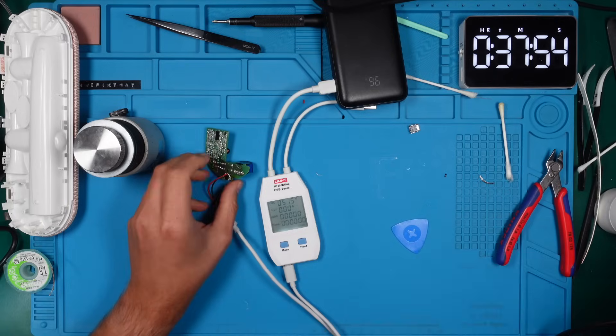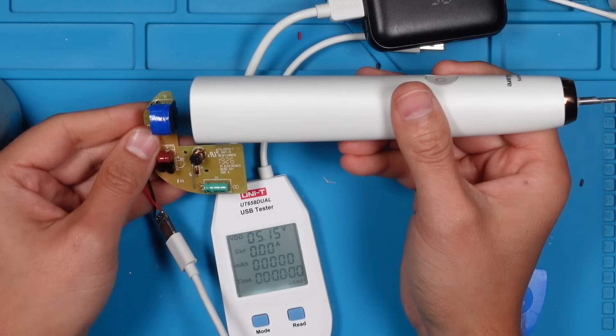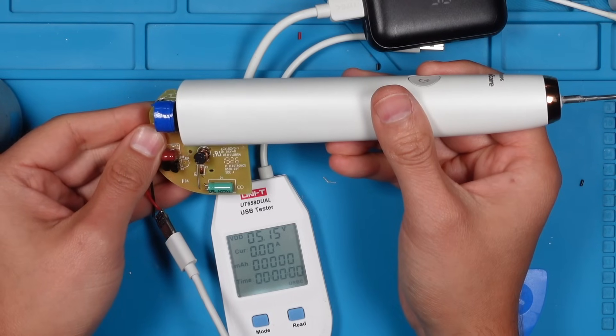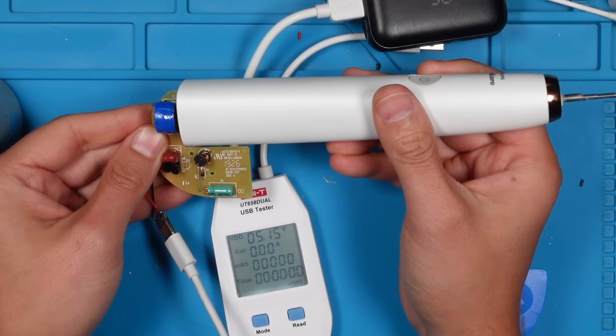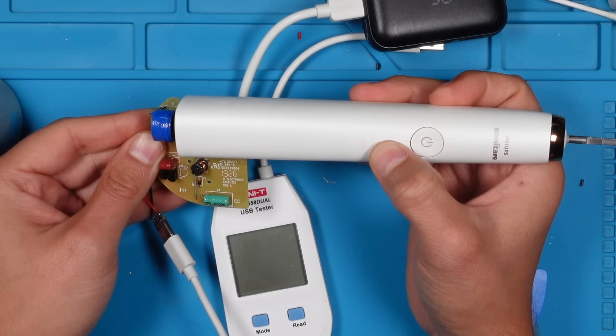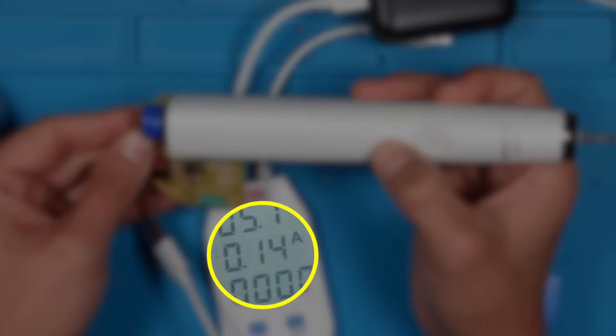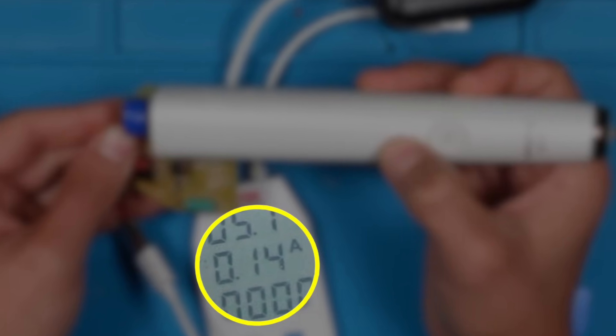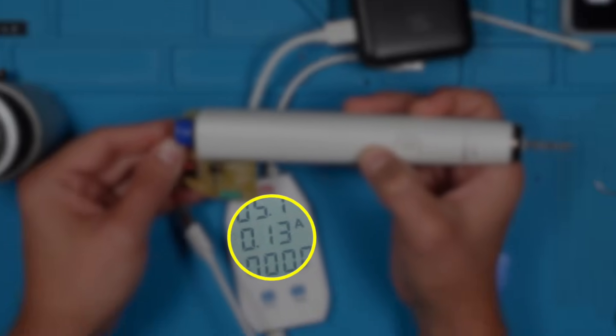Alright, let's get the toothbrush and check if it draws current and charges up. Come on, be a good toothbrush and charge up. Yes, as you can see it's working. Awesome. Now we can juice it up with nearly any USB-C cable. Fantastic.